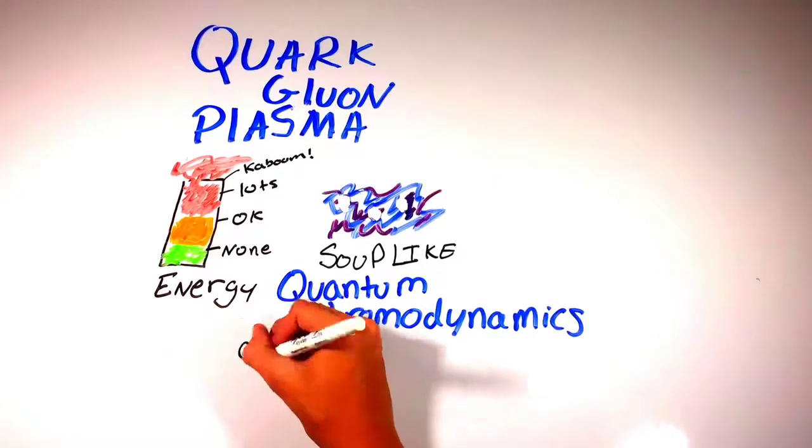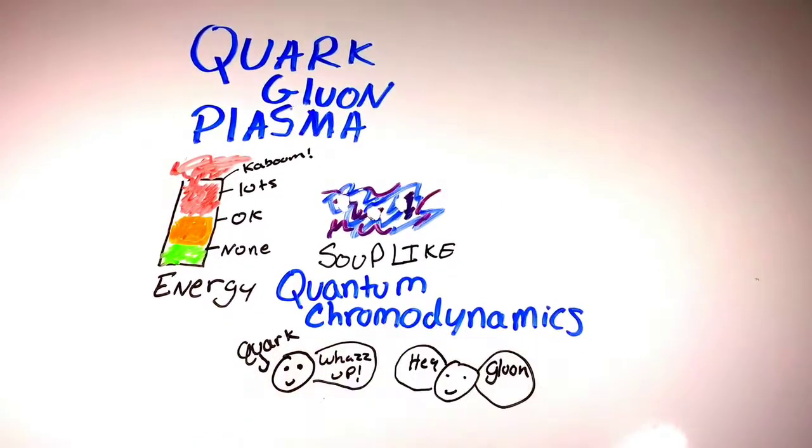Quark-gluon plasma is a part of quantum chromodynamics. What is quantum chromodynamics, you may ask? Well, in a nutshell, it is the interaction between quarks and gluons.